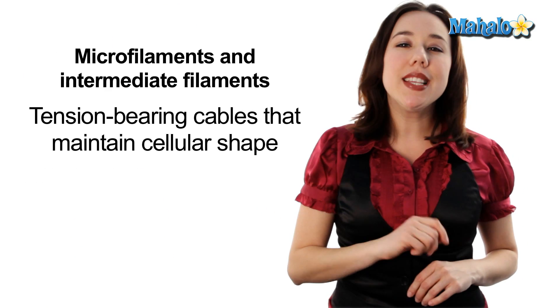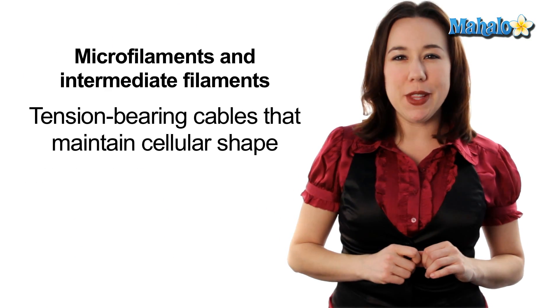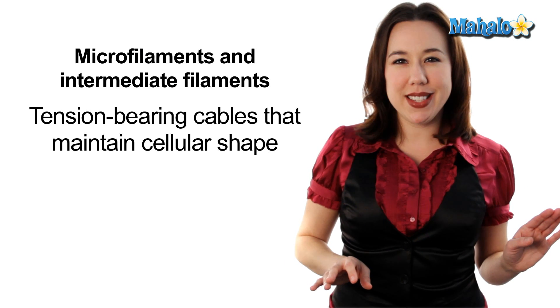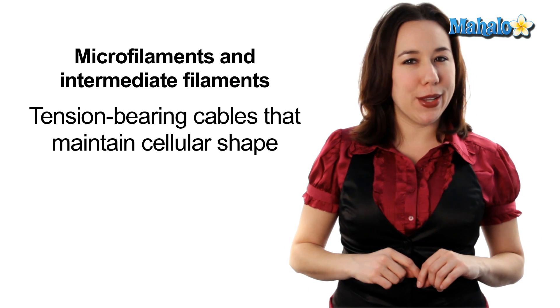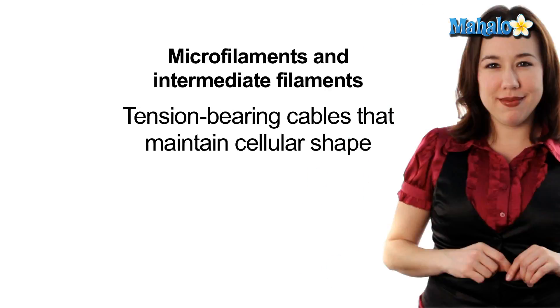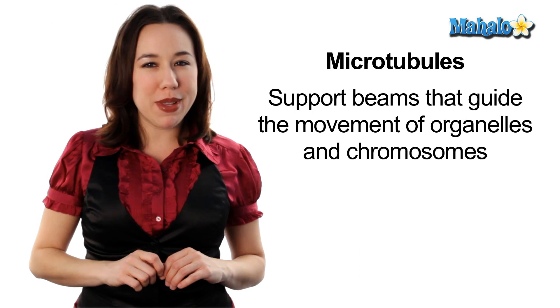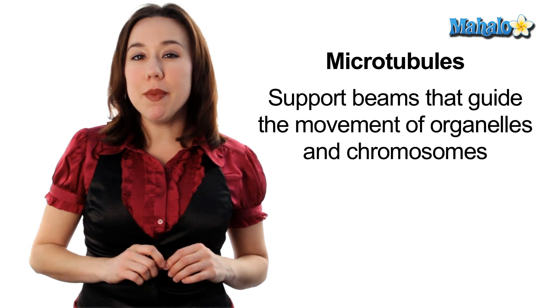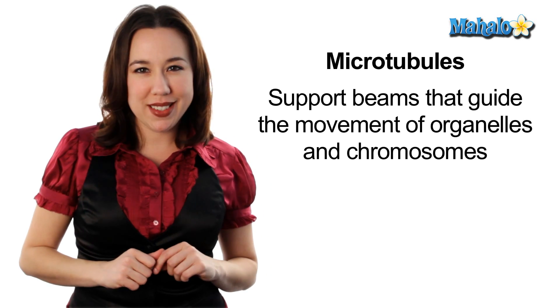Microfilaments, the thinnest of the three, and intermediate filaments are like tension-bearing cables stretching across the cytoplasm helping to maintain cellular shape. Our third type is microtubules. These are straight, hollow support beams of the cell and they help guide the movement of organelles as well as chromosomes.